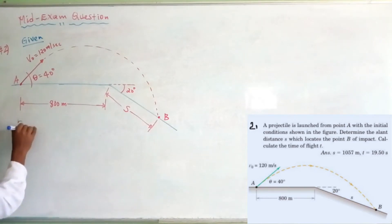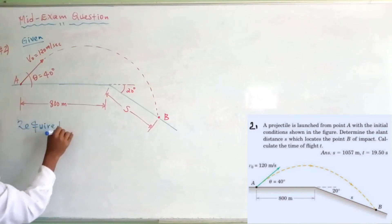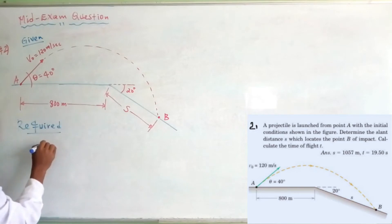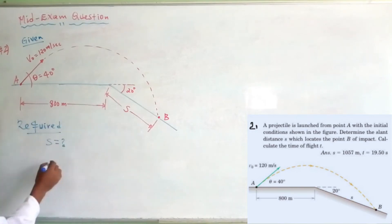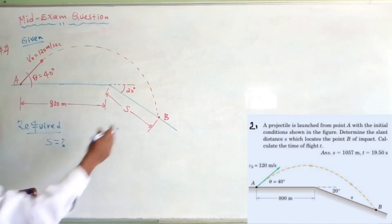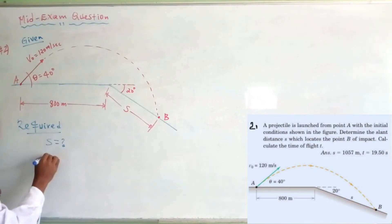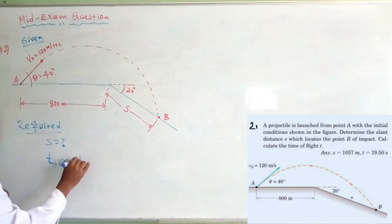We are required to calculate S, the slant distance locating the point of impact B, and T, the total time of flight.